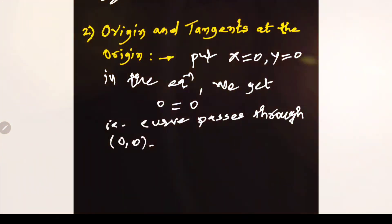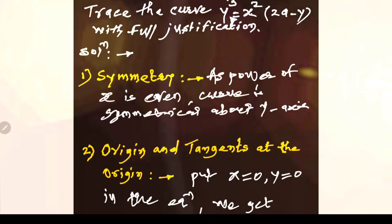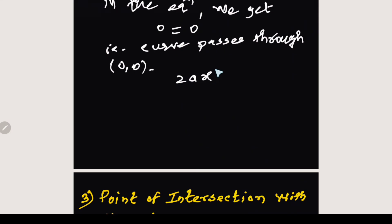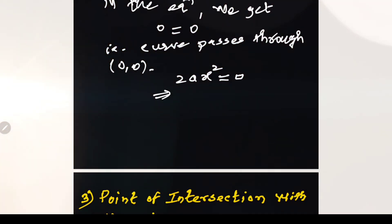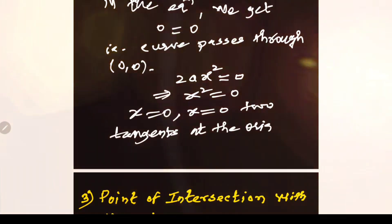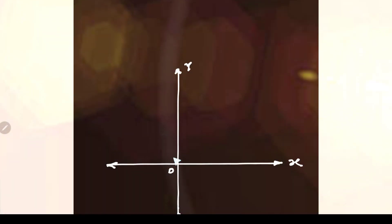As the curve passes through the origin, we require to find the tangents at the origin. To find that tangent, we have to find the lowest degree term in the equation. The degree of the first term is 3, degree of the second term is 2, and degree of the third term is 3. Therefore, the lowest degree term is 2a · x². Equating that to 0, it implies x² = 0, meaning x = 0 and x = 0. These are the two tangents at the origin.